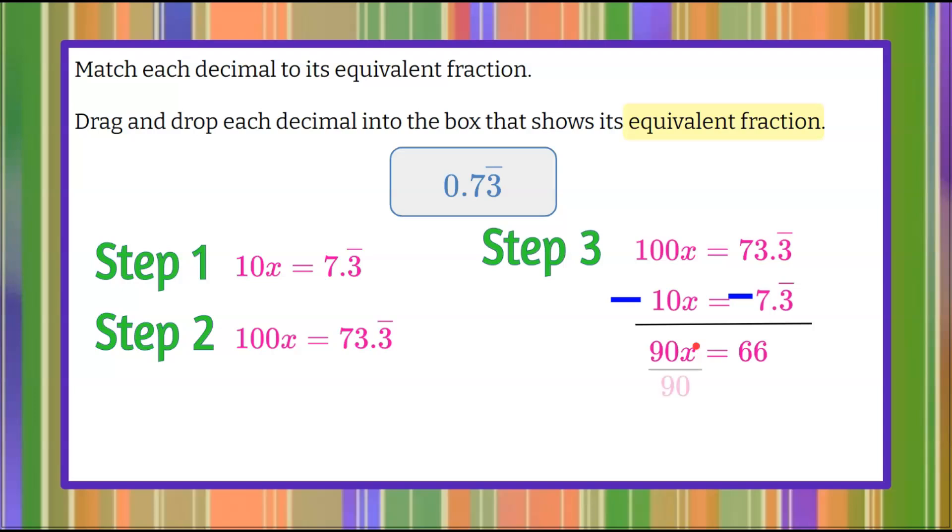So now, to solve for x, I'm going to divide each side by 90. 90 divided by 90 is 1, leaving me 1x or x. 66 and 90 are both divisible by 6. So we have x equals 66 divided by 6 is 11, and 90 divided by 6 is 15.